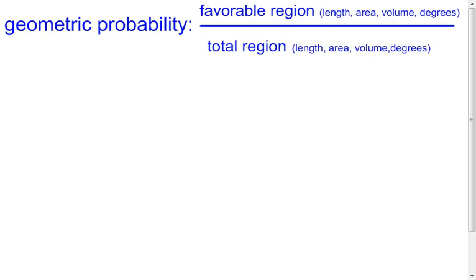Now, those regions could be lengths, they could be areas, they could be volumes, they could be degrees, many things just dealing with a geometric aspect to it instead of regular old probability.